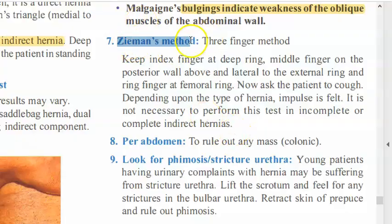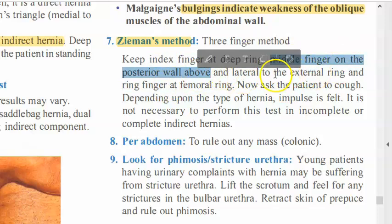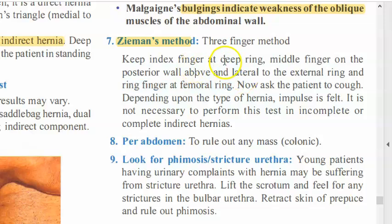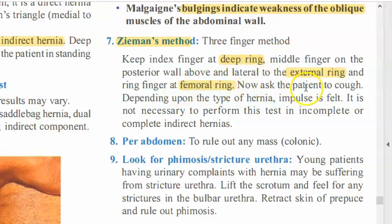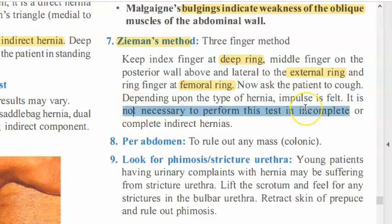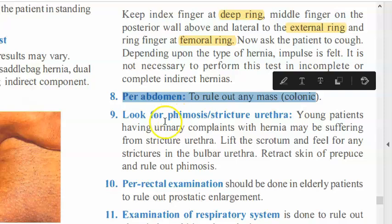Zieman's three-finger method: using the left hand, place the index finger on the deep ring, the middle finger on the posterior wall above and lateral to the external ring, and the ring finger at the femoral ring — occluding all three. Ask the patient to cough. If felt at the femoral ring it is a femoral hernia; at the external ring it is coming via the inguinal canal; if it comes through despite all three being occluded, it could be a direct hernia.